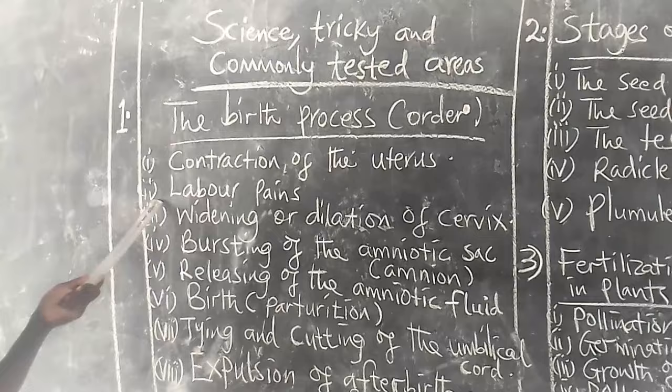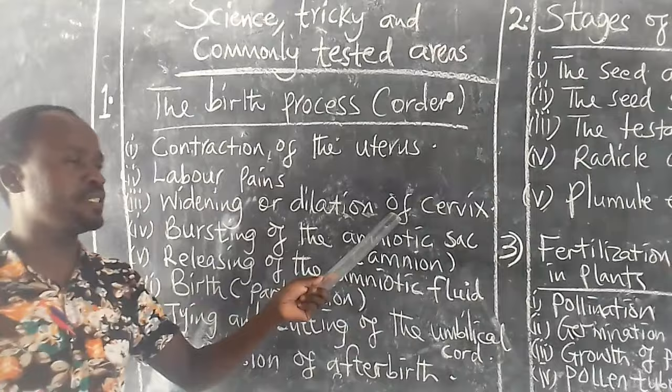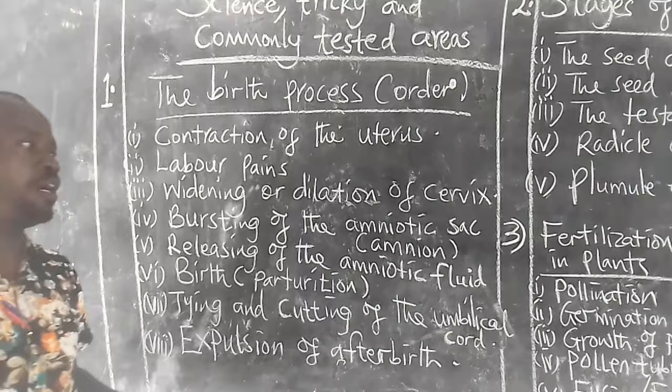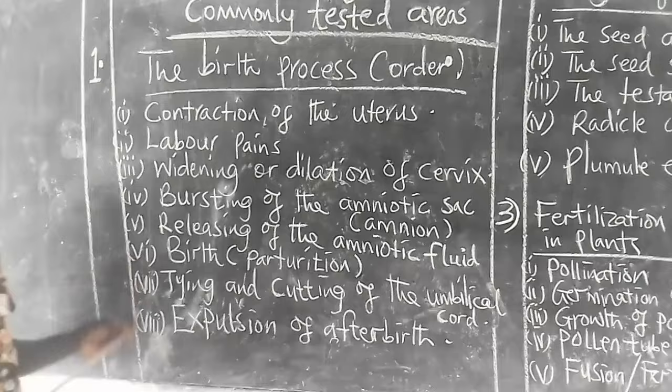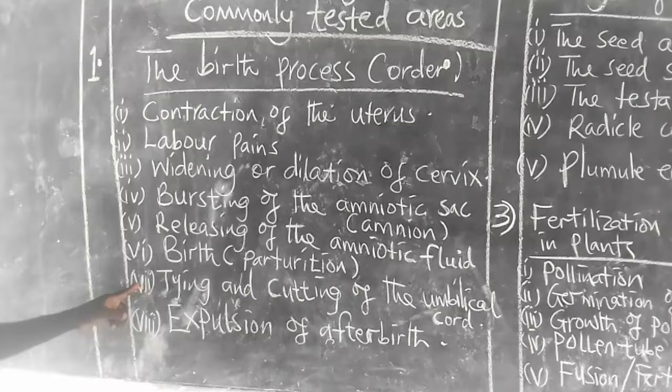Number 3: widening or dilation of cervix. Number 4: bursting of the amniotic sac, also called amnion. Number 5: releasing of the amniotic fluid. Number 6: birth, also called parturition. Number 7: tying and cutting of the umbilical cord. The umbilical cord is tied first before it is cut.